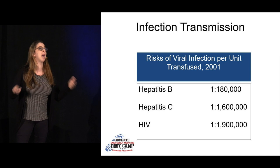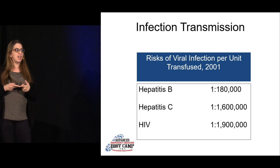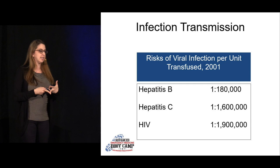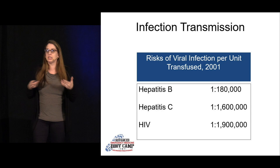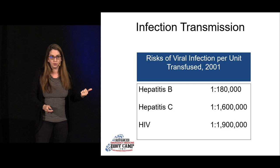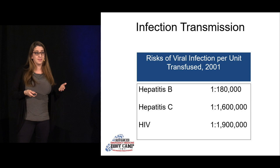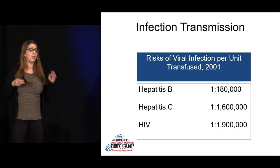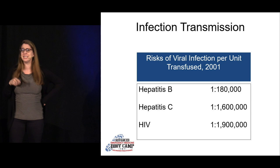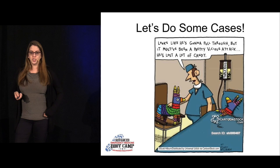In general, up to 20% of transfusions can have some kind of reaction; most are mild, but some can be life-threatening. The risk of HIV or hepatitis C transmission is about one in two million due to strict blood bank screening. Bacterial sepsis can occur — Yersinia can grow in refrigerated blood. The risk of bacteremia is one in 500,000 for RBCs and one in 40,000 for platelets.